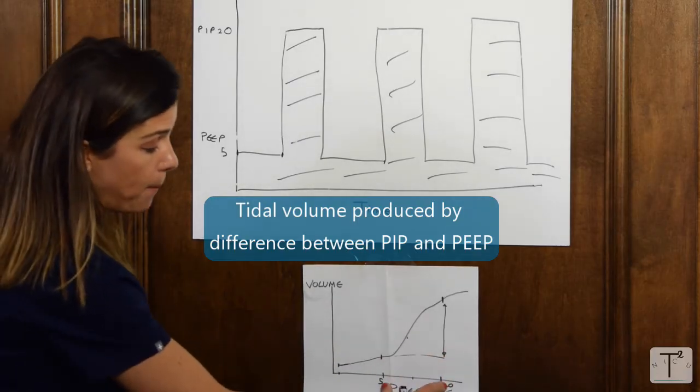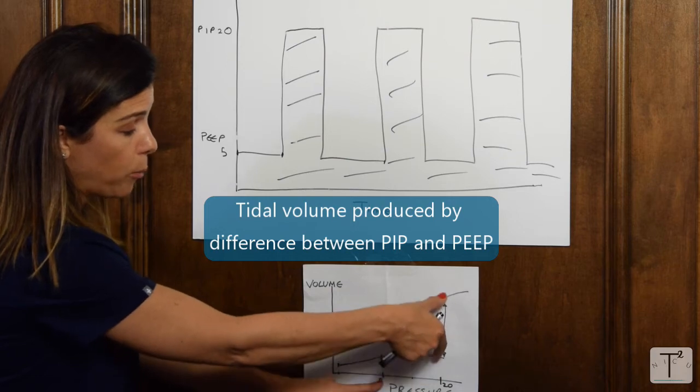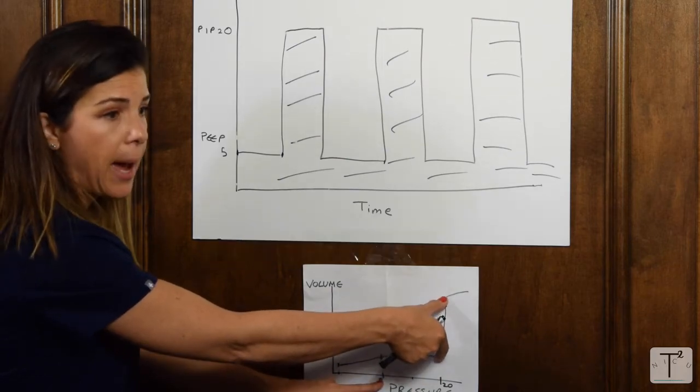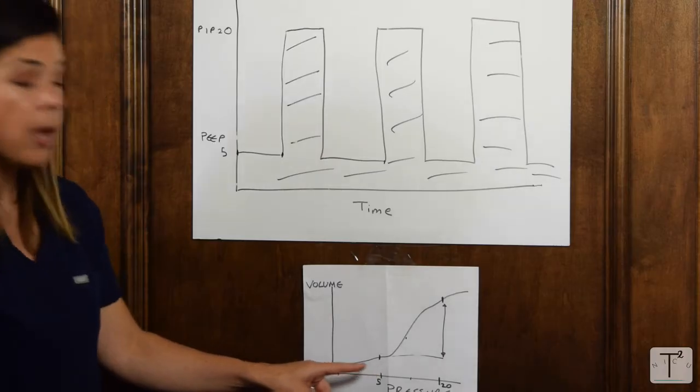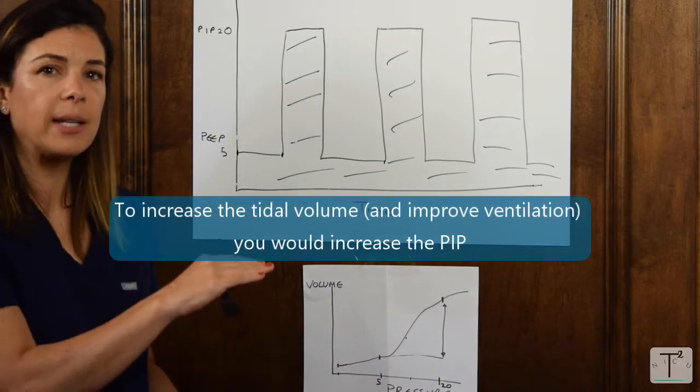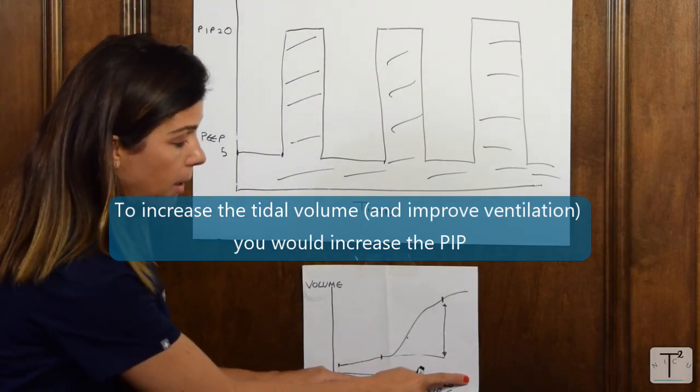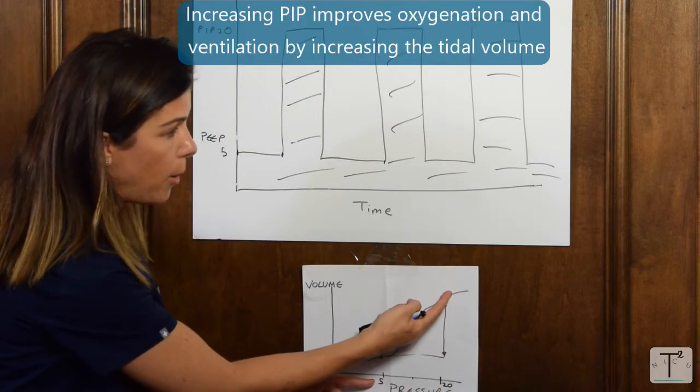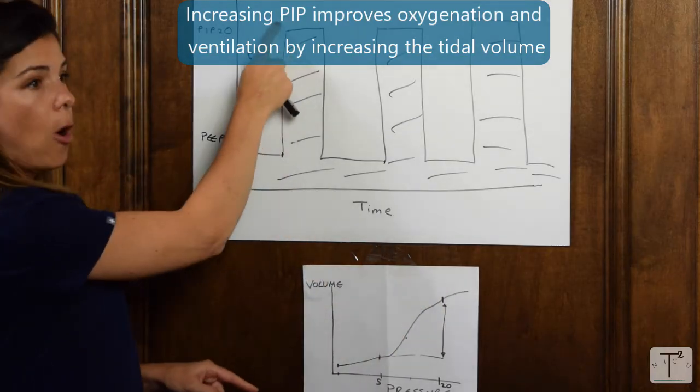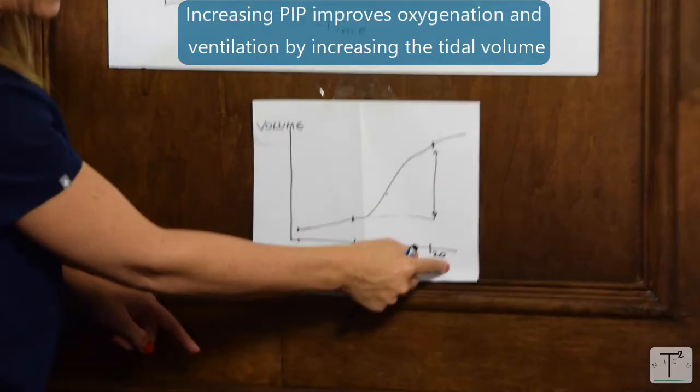If your PIP is 20 and your PEEP is 5, then your difference in pressure is going to result in a tidal volume that's larger. You can see from this graph that to increase your tidal volume, therefore improve your ventilation and blow off your CO2, you can go up on the PIP. Can you see how going up on the PIP improves both the oxygenation as well as the ventilation because it's increasing your tidal volume.